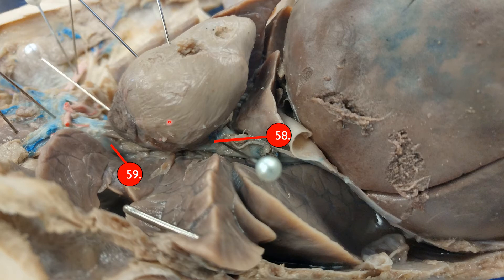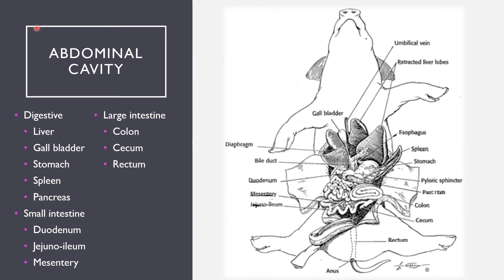Once we've finished with the neck and thoracic dissection, we can open up the abdominal cavity. There's just a slight cut right above the umbilical cord, cut straight up and then down on either side, spreading open that abdominal cavity. Other things you can see: the liver, gallbladder, stomach, spleen, pancreas, the colon, cecum and rectum, as well as small intestinal structures like the duodenum, the jejunum, and then the mesentery.